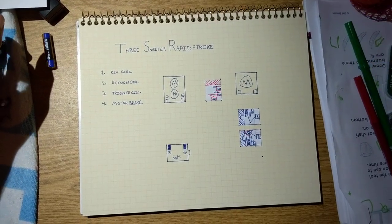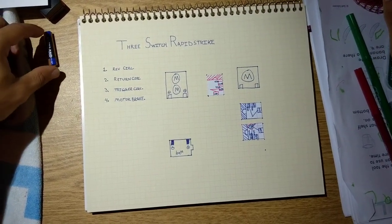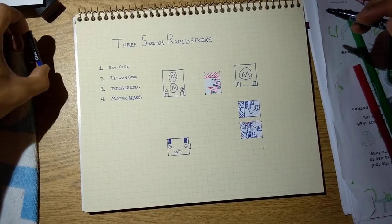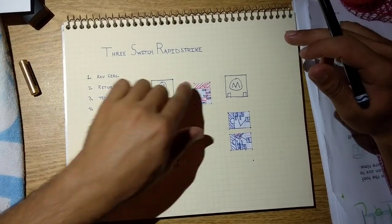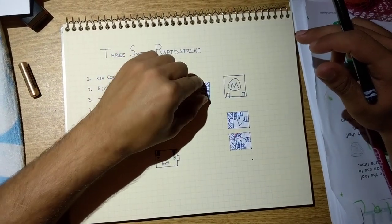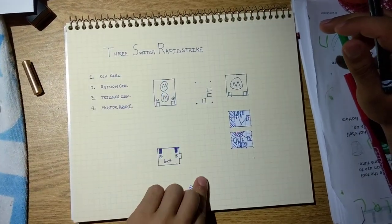Alright, this is how I plan on wiring up my three switch rapid strike. I'm really lucky here because I have these great paper switches. If you flip them over, they become active or inactive, whatever way the switch is for you.